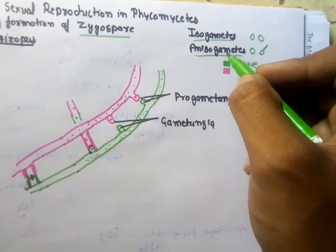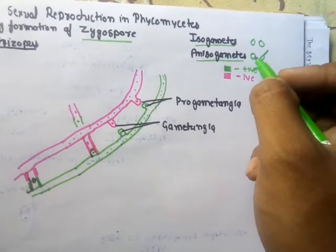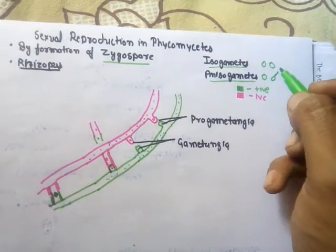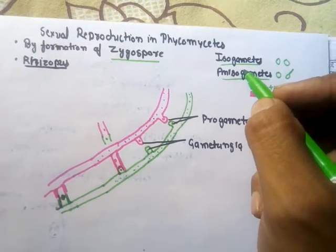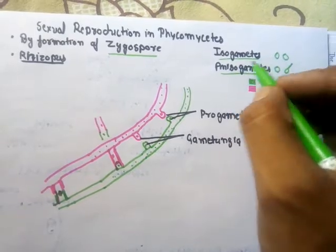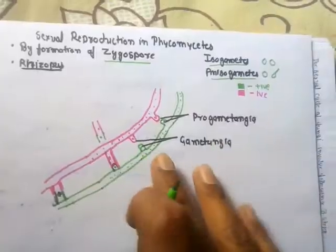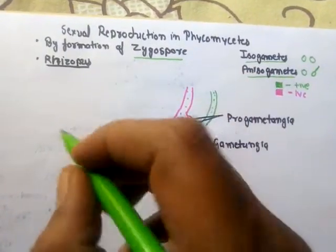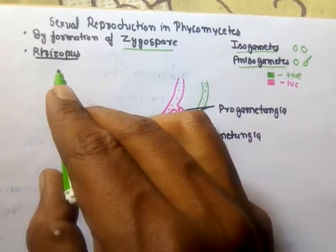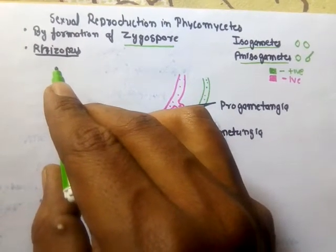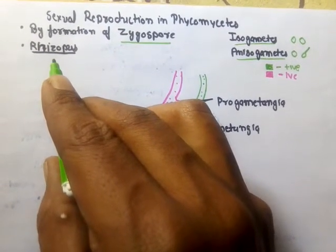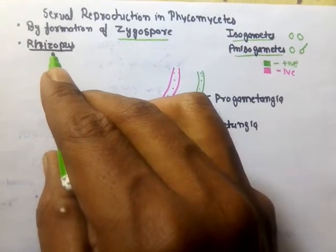Anisogametes are dissimilar in morphology and external features ('aniso' meaning dissimilar). In class Phycomycetes, the fusing gametes for zygospore production can be either isogametes or anisogametes. The example we are considering is Rhizopus, a member of Zygomycetes — commonly known as bread mold, Rhizopus stolonifer.